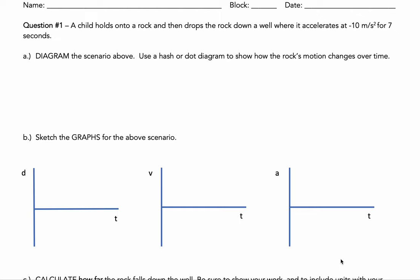Let's take a look at problem number one for the review guide. In this scenario, a child is holding onto a rock and dropping it down a well, where it's accelerating. This tells us right away that since the child is holding the rock, the initial velocity would be zero — zero meters per second. It doesn't matter what unit we use since it's zero. Then it drops down the well where it's accelerating.